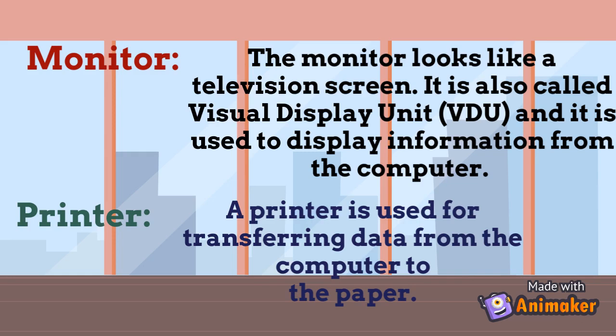Let's see some examples of output devices. Monitor: the monitor looks like a television screen. It is also called a visual display unit, or VDU. It is used to display information from the computer. If I write anything in MS Word or MS Excel — A, B, C — we see it on the monitor. That is why it is also called a visual display unit, which is a common exam question. Take a screenshot of this.